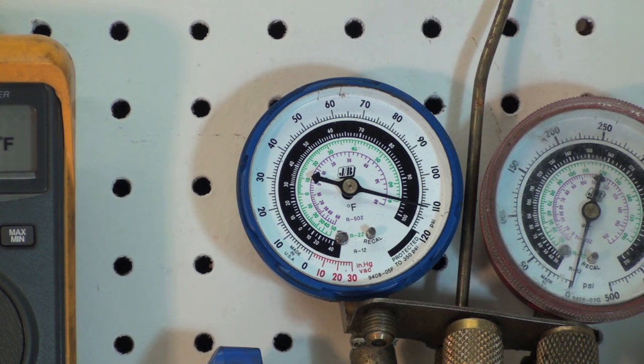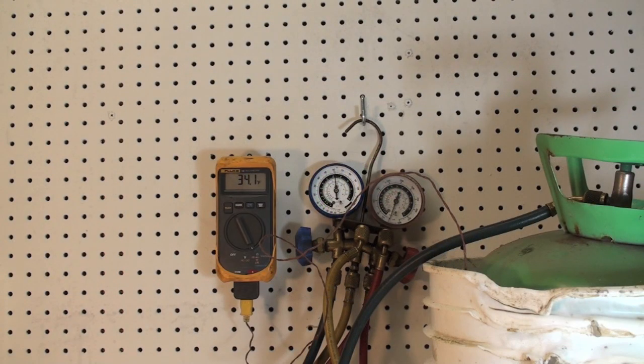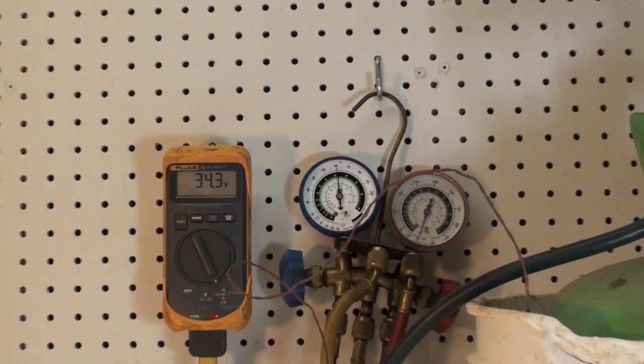Now I'm going to change the temperature of that cylinder and let's see what happens. Okay, now what I've done, you can see over there in the right I've got the cylinder placed in a bucket. Now that bucket's got ice water in it and so that's going to lower the saturated temperature pressure of the liquid and gas mixture that's in it. Well, let's see what our gauge says.